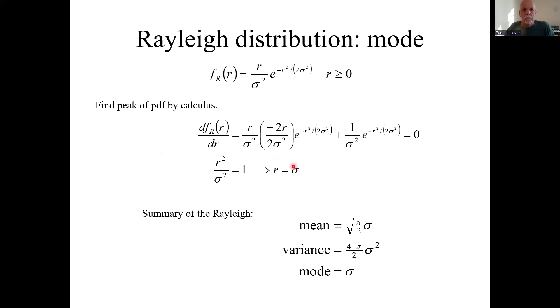So it's where r equals sigma. So this distribution, its peak is where r equals sigma. So we have the mean, the variance, and the mode of the Rayleigh distribution.